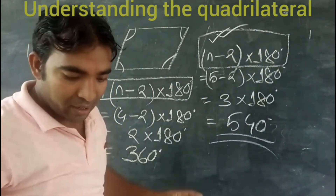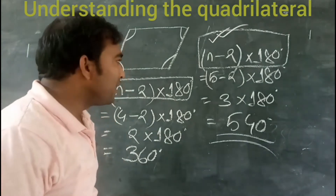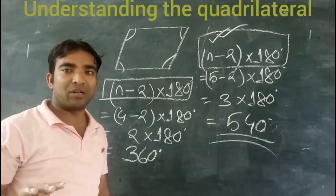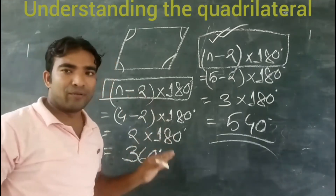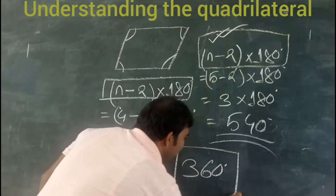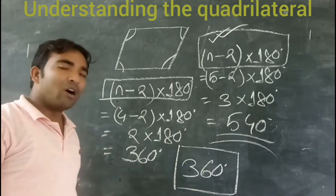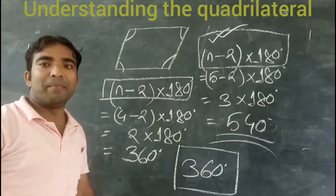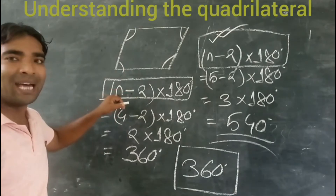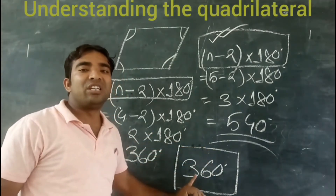Now, when we can find the sum of the interior angles, we also have to remember the exterior angle. The sum of the exterior angles of any polygon — whether it is a triangle, quadrilateral, pentagon, hexagon, heptagon, octagon, nonagon, or decagon — for any polygon, the sum of the exterior angles will always be 360 degrees. This is constant for any polygon. The sum of the interior angle will change based on the number of sides, but the sum of the exterior angle is always constant at 360 degrees.